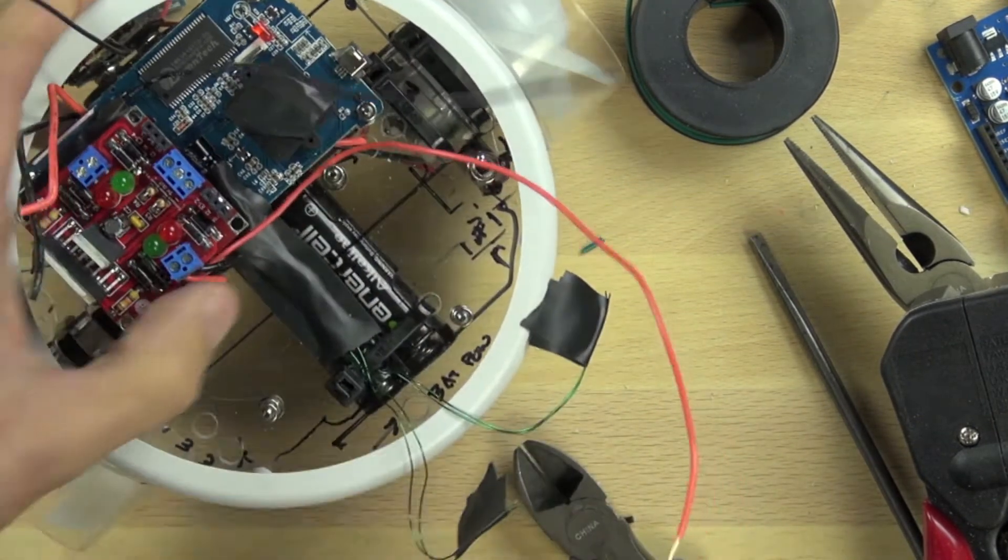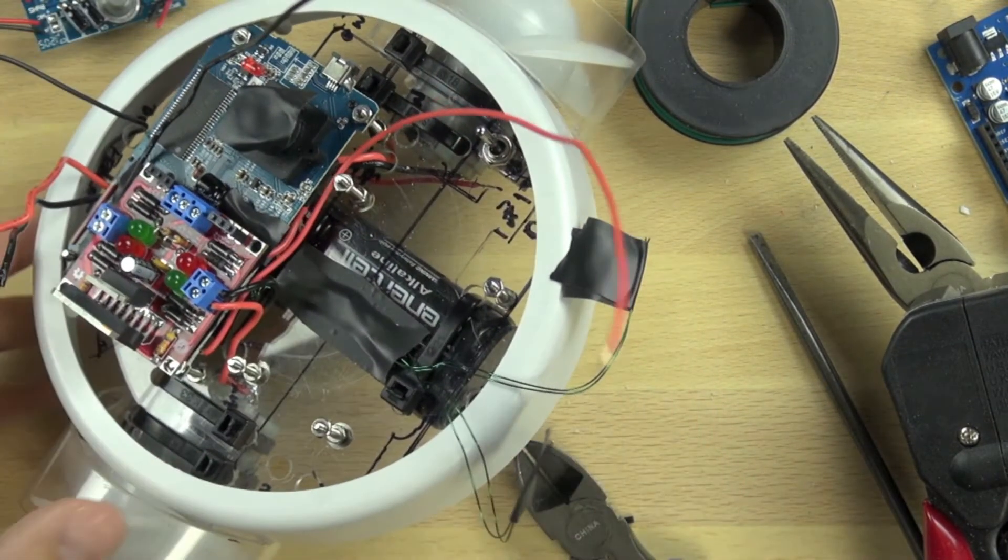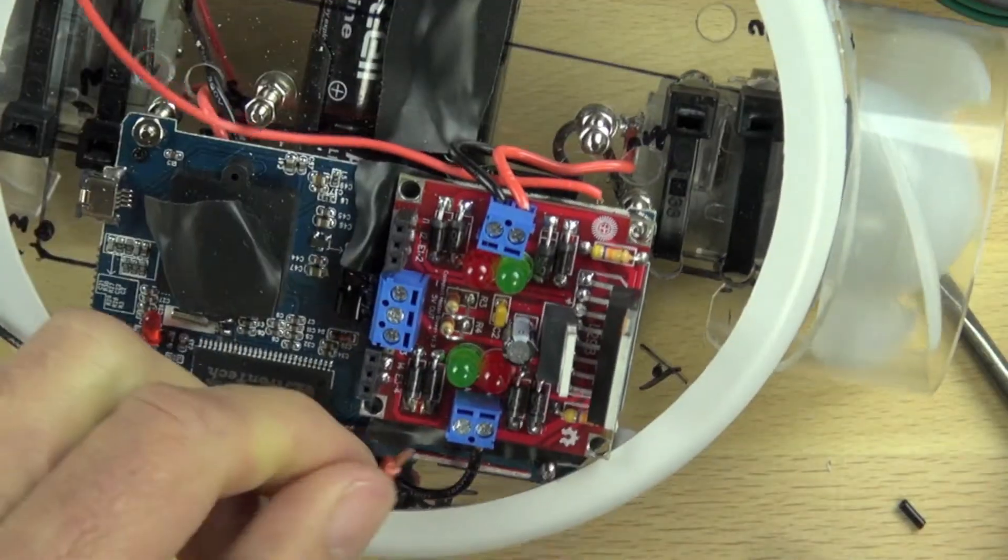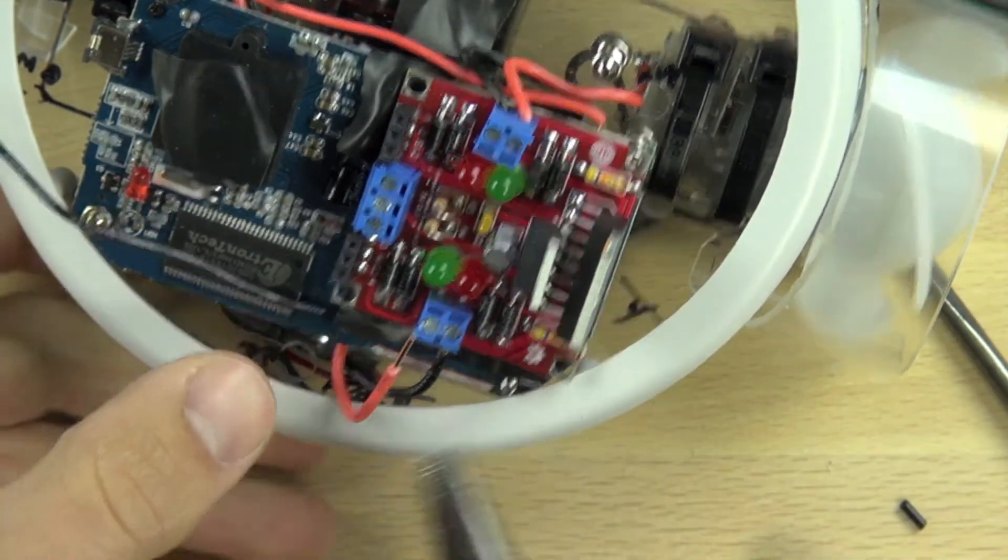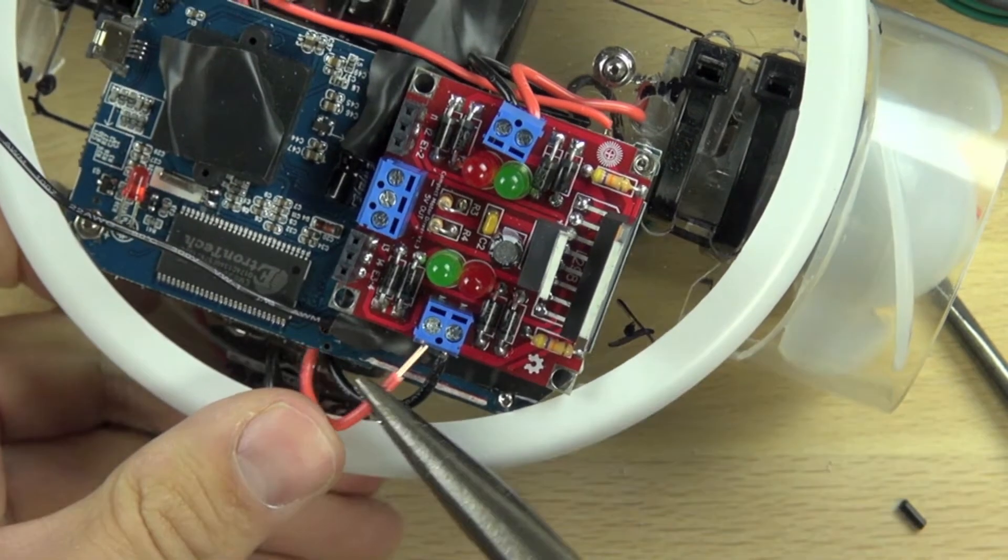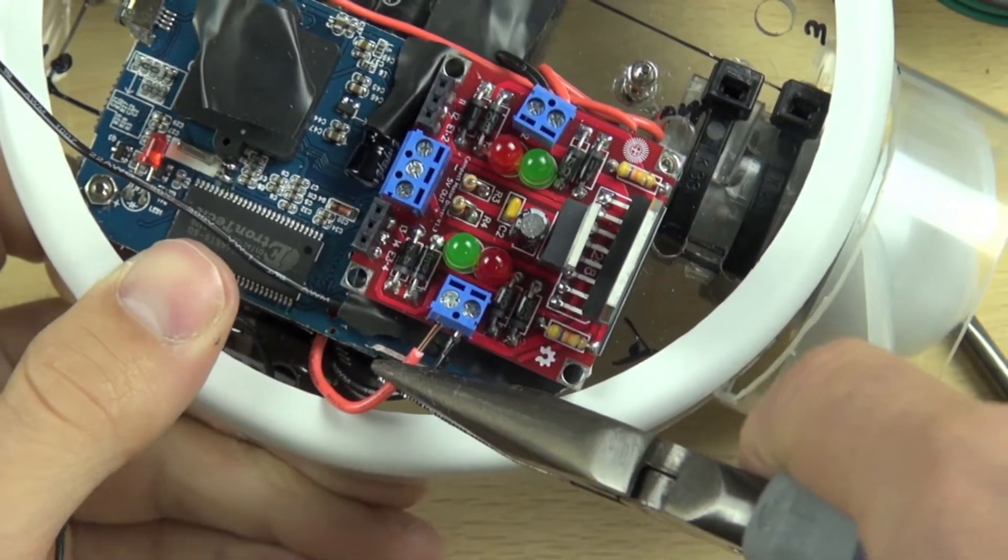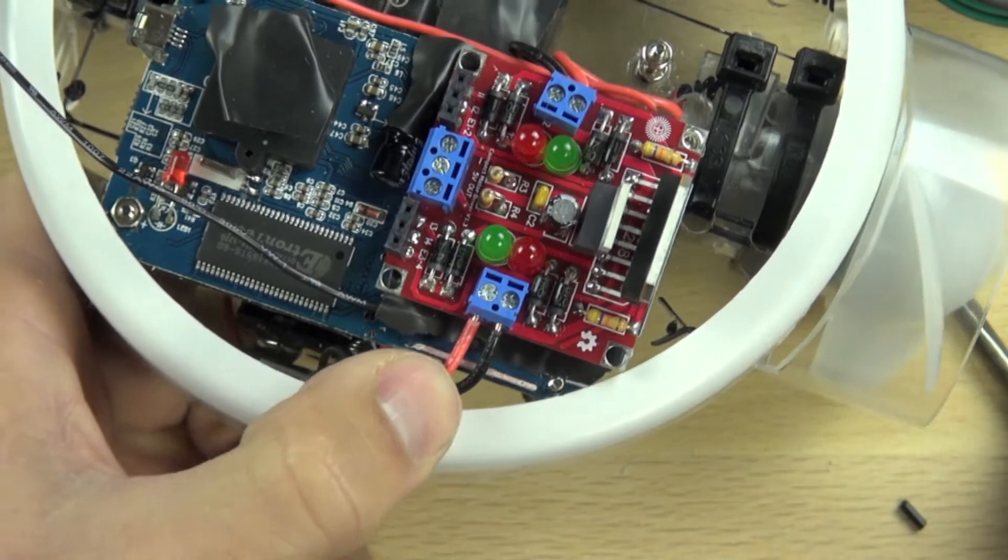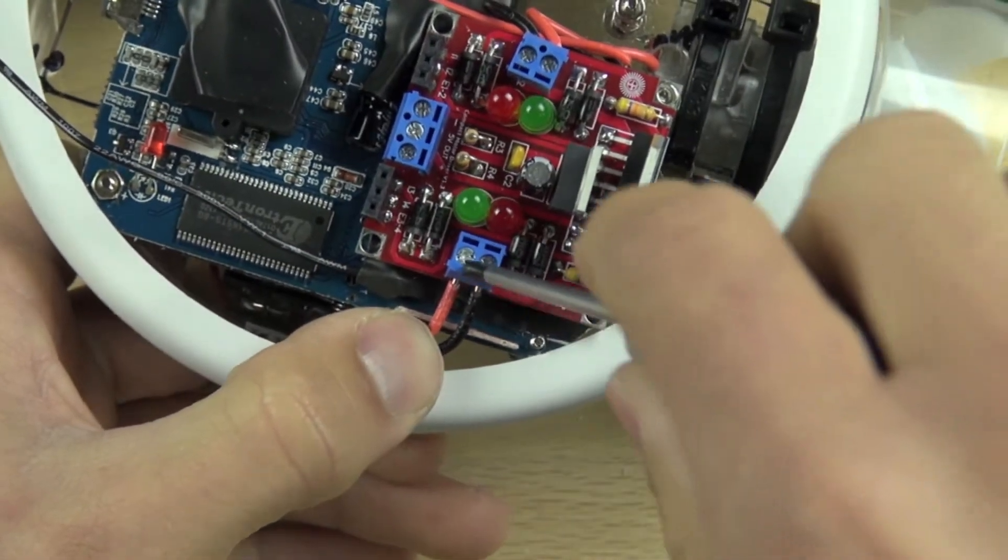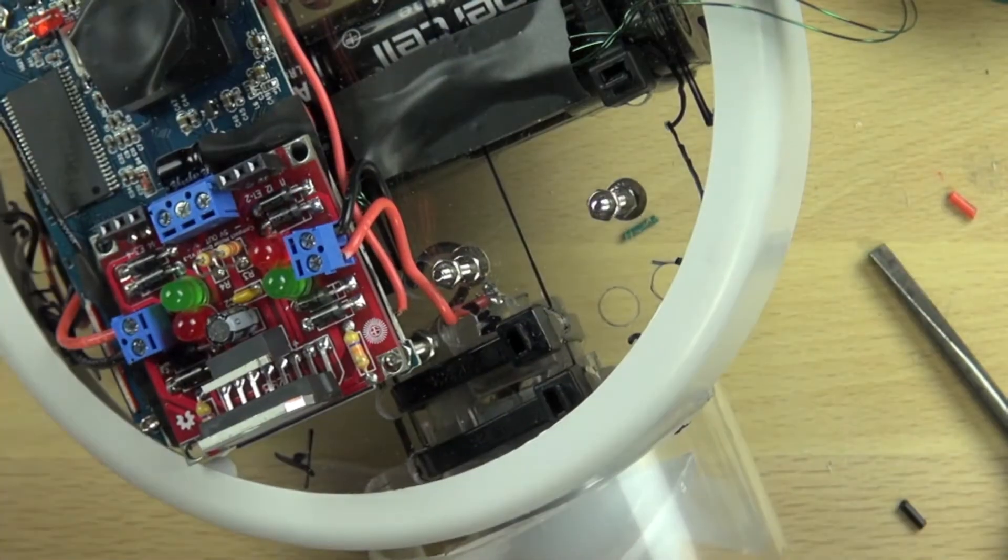Each motor has two wires and both of those wires go to each one of those blocks. So each block is for one motor. Now we're connecting the last wire for the motor on the other side, and we just tighten that down.